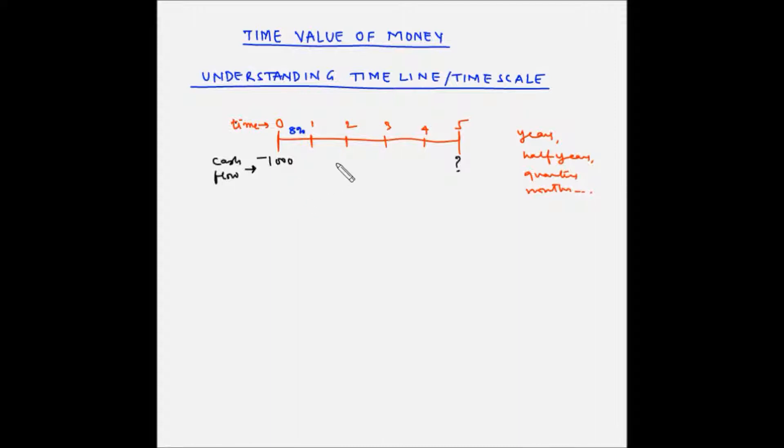Here the interest rate for each of these five periods is 8%. A lump sum cash outflow is made at time zero, that is today. Now since the initial thousand rupees is an investment made by you, it is an outflow from your pocket and hence the minus sign here.